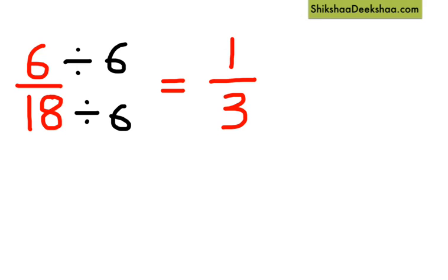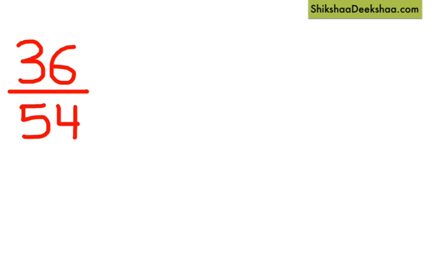To understand how to simplify, let's take one more example. Now let's write what all numbers can divide both 36 and 54 without leaving a remainder.